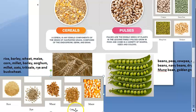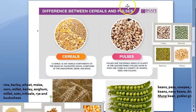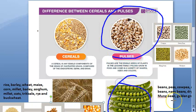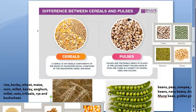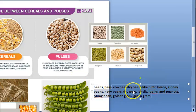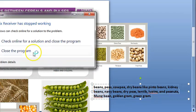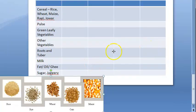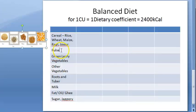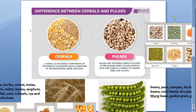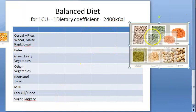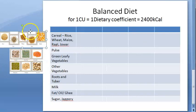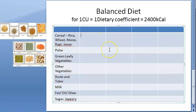Examples of cereals are rice, wheat, maize, and ragi. Pulses are from the legume family — they come in pods. Examples include peas, cow peas, moong, soya bean, peanuts (groundnuts), and kidney beans. So cereals include rice, wheat, maize, and ragi; pulses include all types of peas and legumes.